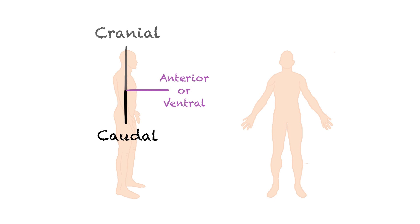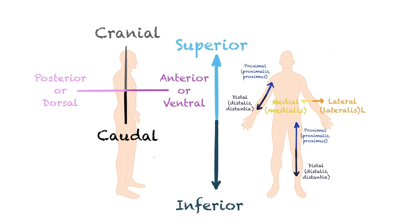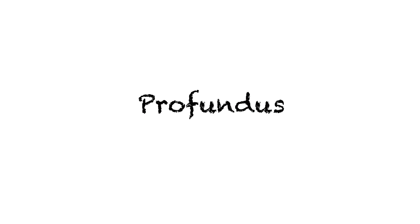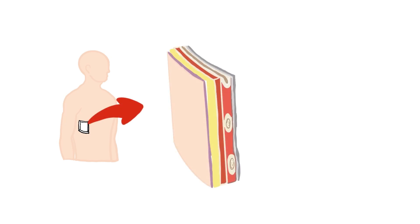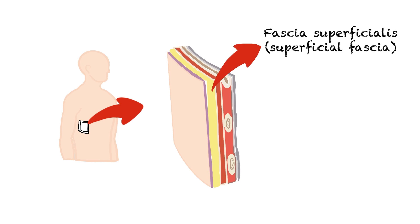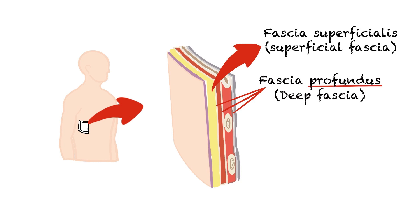Anterior or ventral is the front part; posterior or dorsal is the back part. As we've seen, superior shows the upper part and inferior shows the lower part. Superficial describes a position closer to the surface of the body — for example, the skin is superficial to the bones. Deep, or profundus in Latin, describes a position farther from the surface of the body — for example, the brain is deep to the skull. These two terms are often used in anatomy. Many structures in the body, especially the skin, are made of layers. For example, in a skin section, the sheet under the skin that is more superficial is called fascia superficialis, while the deeper fascia is called fascia profunda.